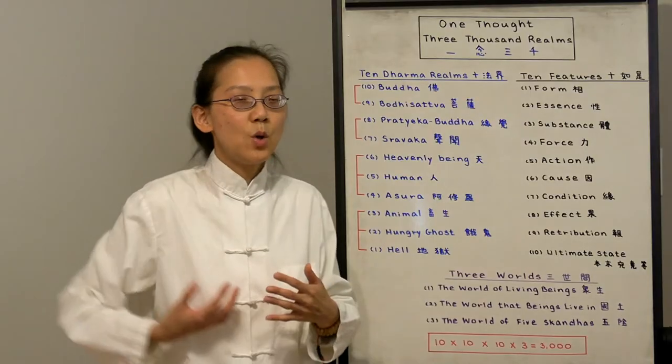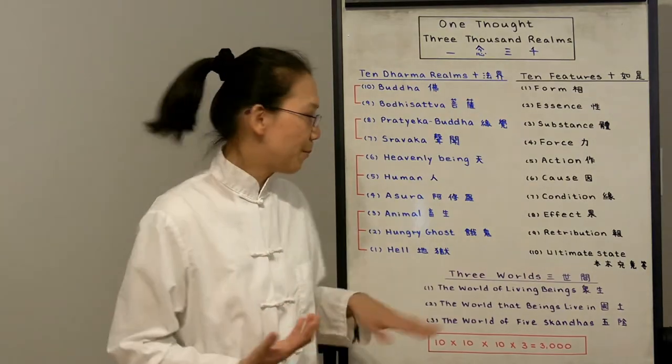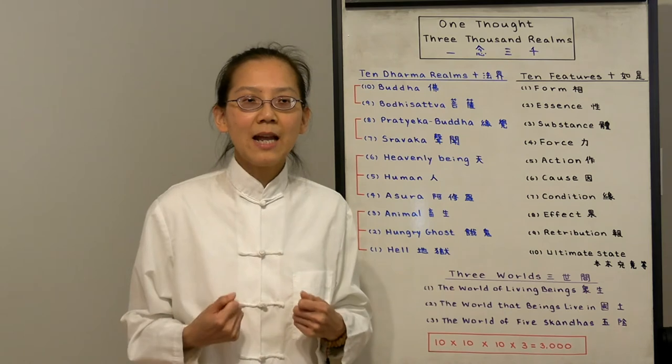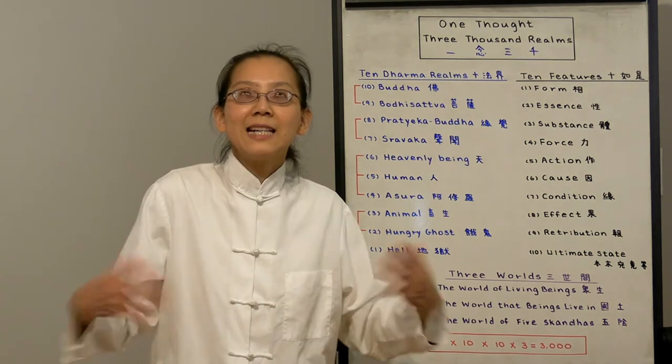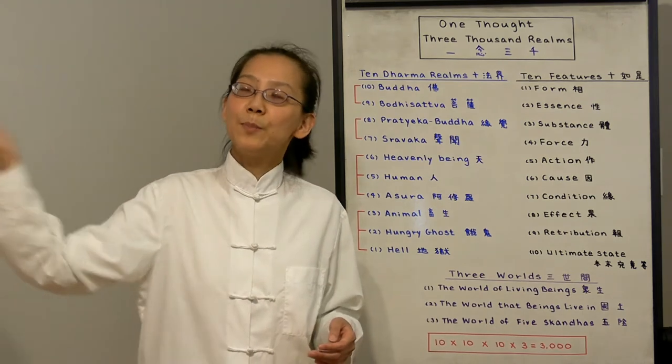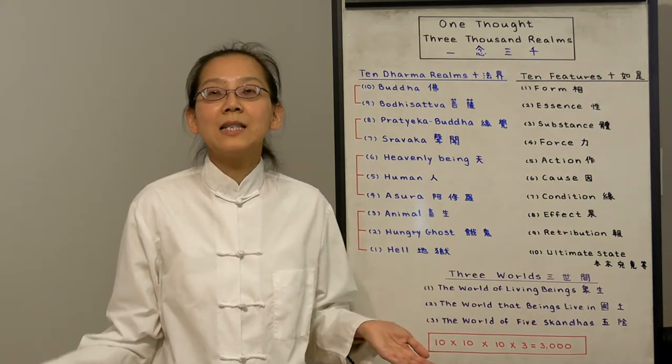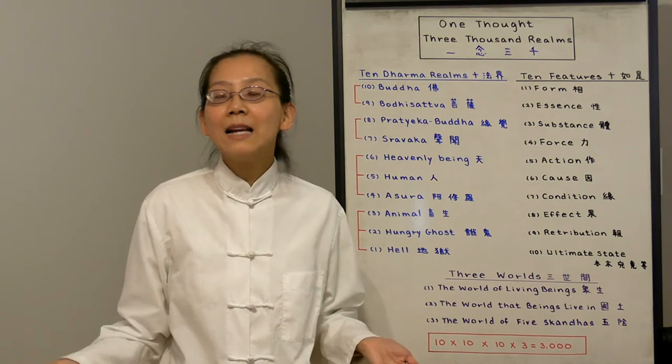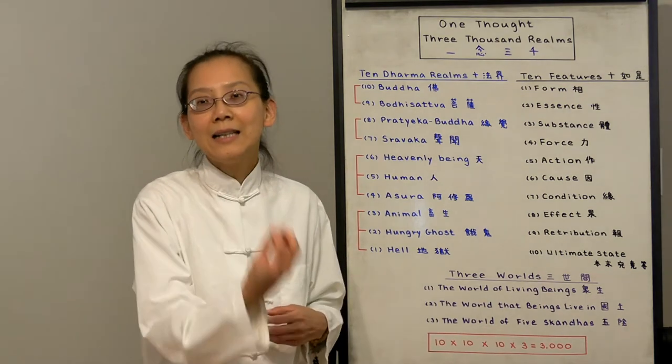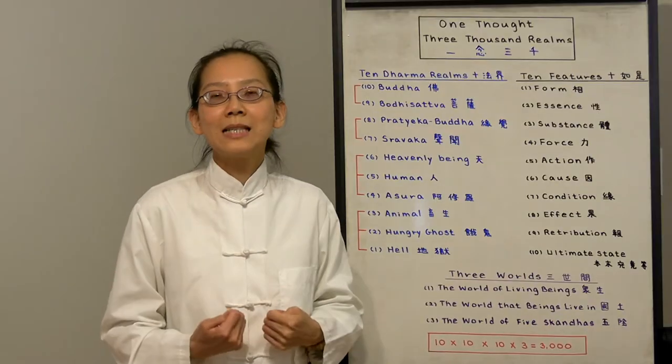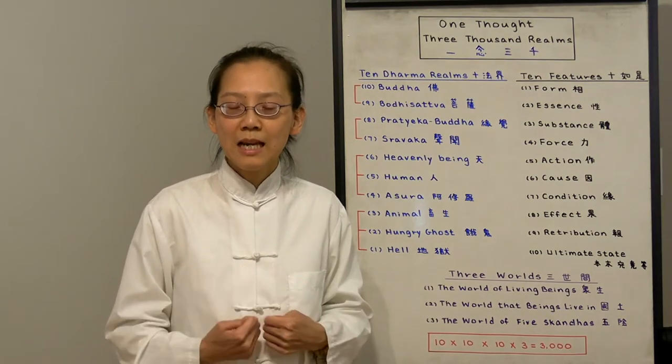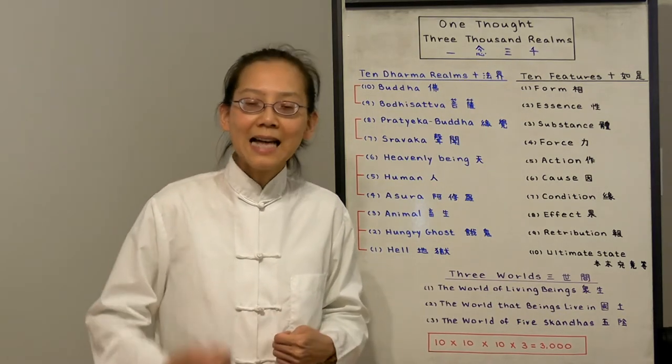Then we have number four, forces. Every realm has their own energy. For example, hell beings—they have the energy of repetitive suffering. They go through a punishment. They die. A small breeze blows by. They wake up and start experiencing the punishment again. They never die. So that's their life force. Buddha's life force is their Bodhisattva vow. They want to save all sentient beings. That's their energy.